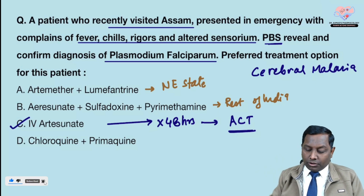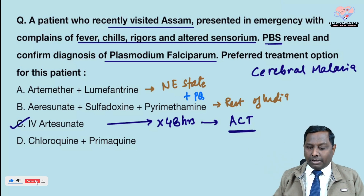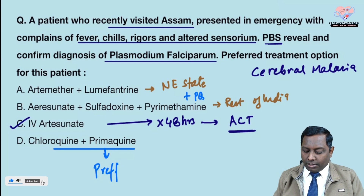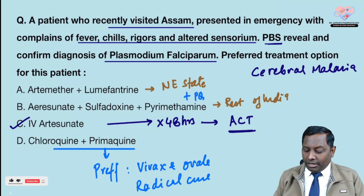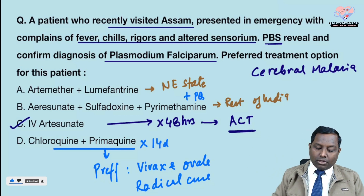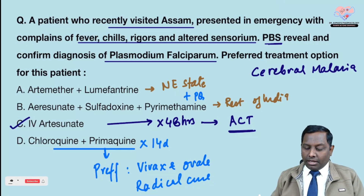Remember, we will also add primaquine — a single dose — in a patient with Plasmodium falciparum. However, chloroquine plus primaquine is preferred for vivax and ovale. The difference is that vivax and ovale require radical cure, which is done with primaquine given for 14 days, whereas falciparum requires only a single dose of primaquine on day two.